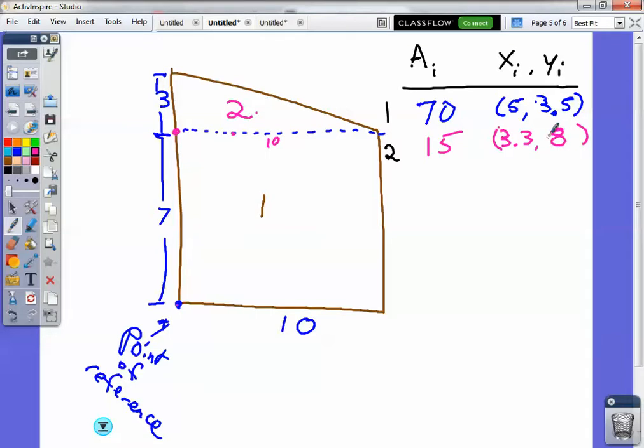Because that centroid location is based off of the same point of reference at the bottom left there. Alright, so I've got the information I need. I've got the areas, and I've got the centroid locations. So now what I'm going to do is I'm going to go ahead and set up my AX and AY. So my sum of AX, and my X, I shouldn't say that as a subscript, my fault. It should be A times X sum of AX, AᵢXᵢ, and my sum of AᵢYᵢ.